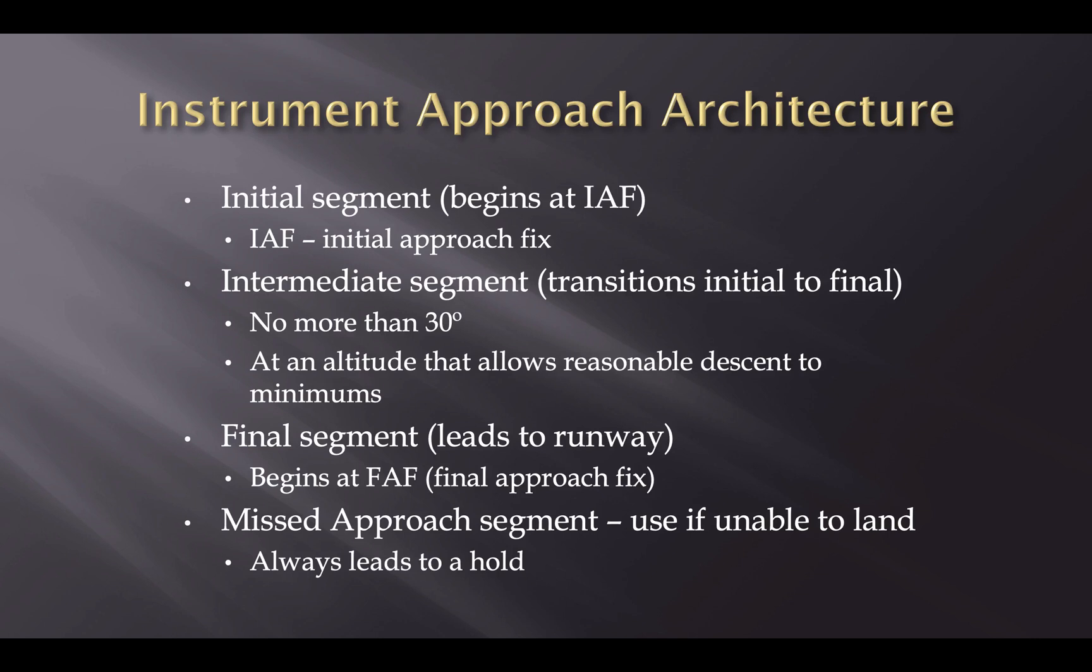Once you cross the final approach fix, you're now on the final segment, which leads you to the runway. Well, that should be the end, right? Assuming that you can land, but if you don't have the requirements to land, you don't have the visibility, you don't have the runway environment in sight, you don't have a normal descent, any of these kind of things, then you would go to the next segment, which would be a missed approach segment. And that's part of the instrument approach architecture.